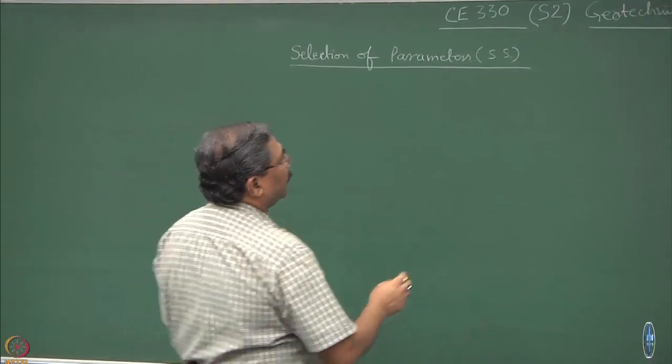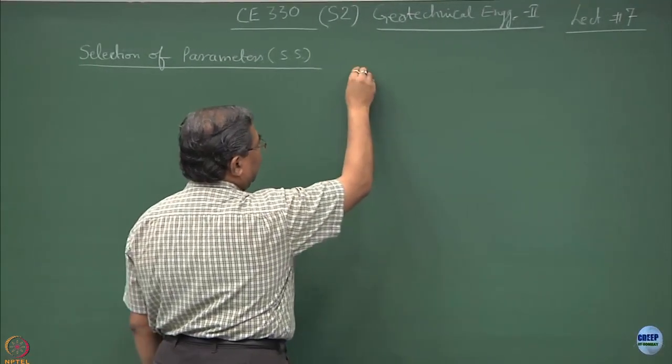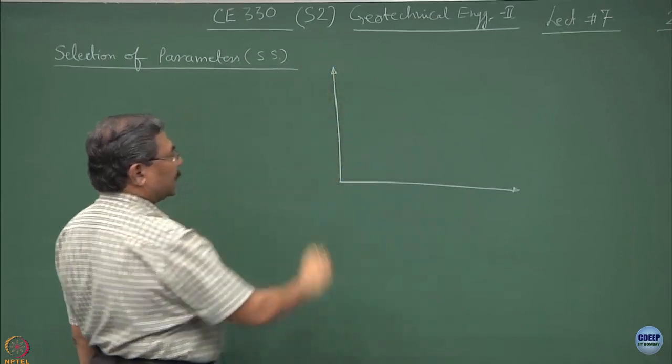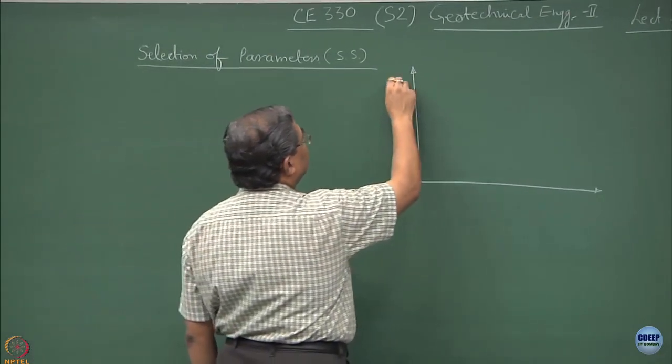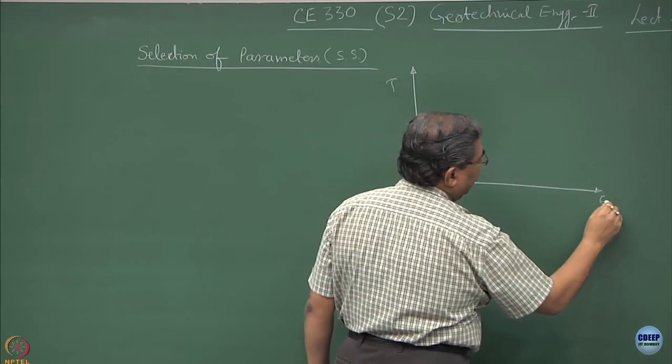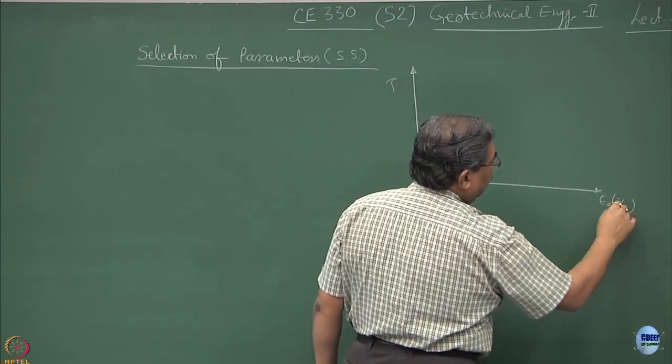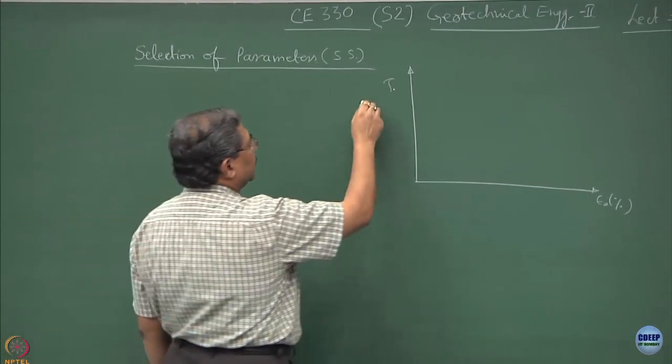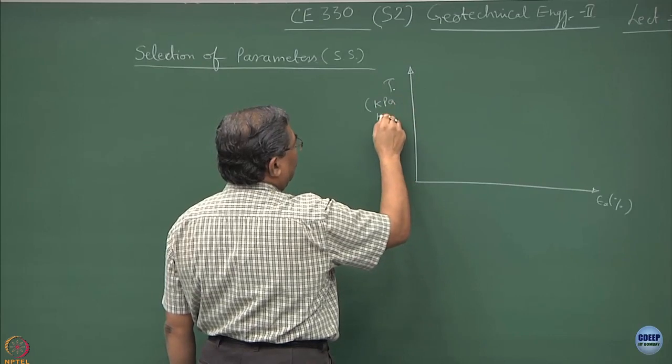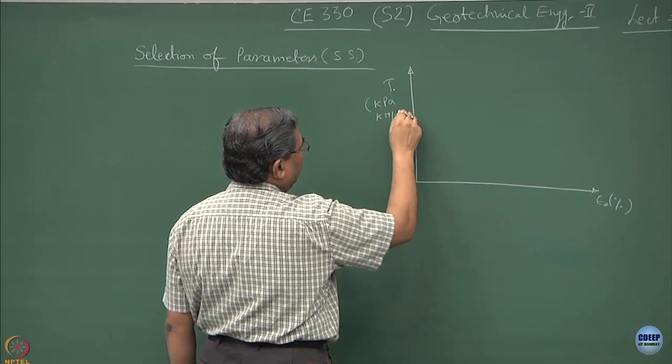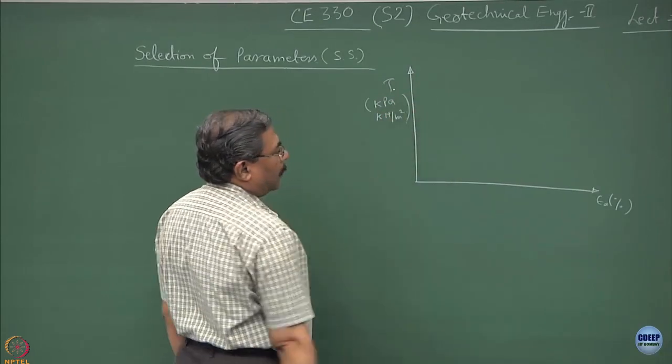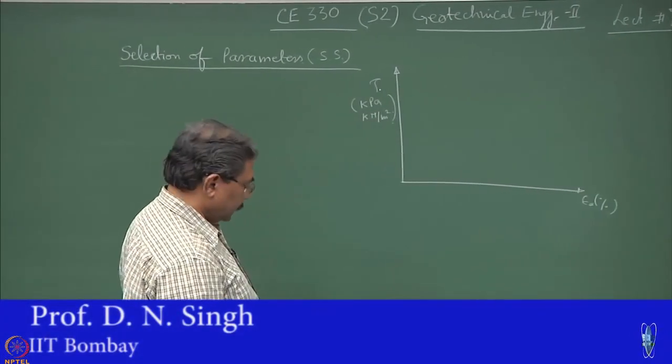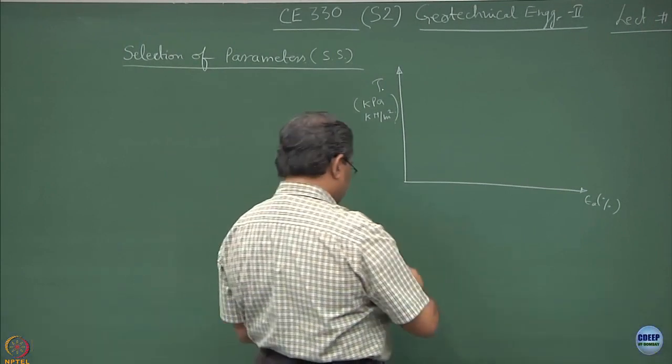Until now, what we have discussed is that if I perform a direct shear box test, I get a typical relationship between the shear stress which is being applied. Normally, shear stress is in kPa or kilonewton per meter square, and this is in percentage, we call this as axial strain. Typically, we get a graph like this.